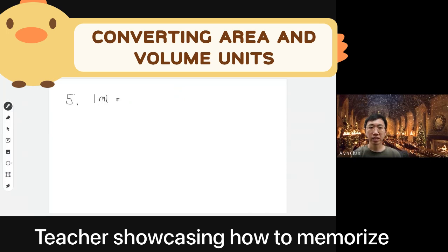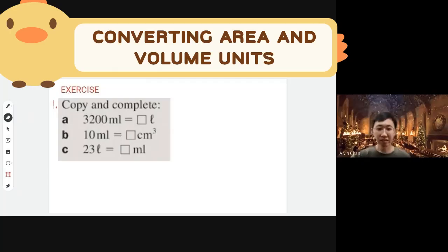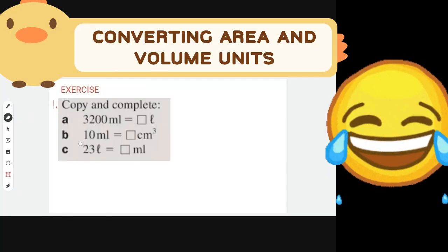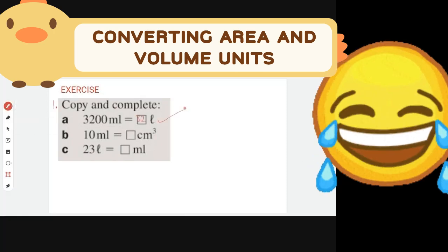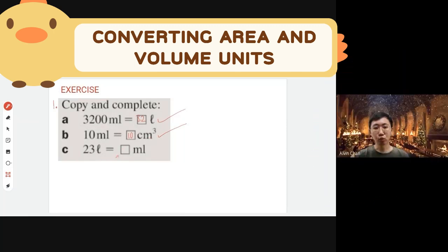For volume and liquid conversions: 1 ml equals 1 cm³. Therefore, 1000 ml equals 1000 cm³, which also equals 1 liter. So 1 liter equals 1000 cm³. Practice answers: 3200 ml equals 3.2 liters; 10 cm³ equals 10 ml; and 23,000 ml equals 23,000 ml. Memorize these relationships naturally.